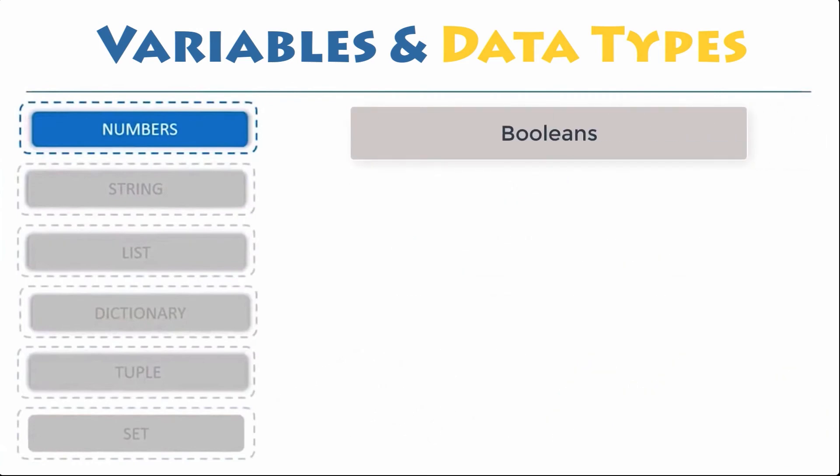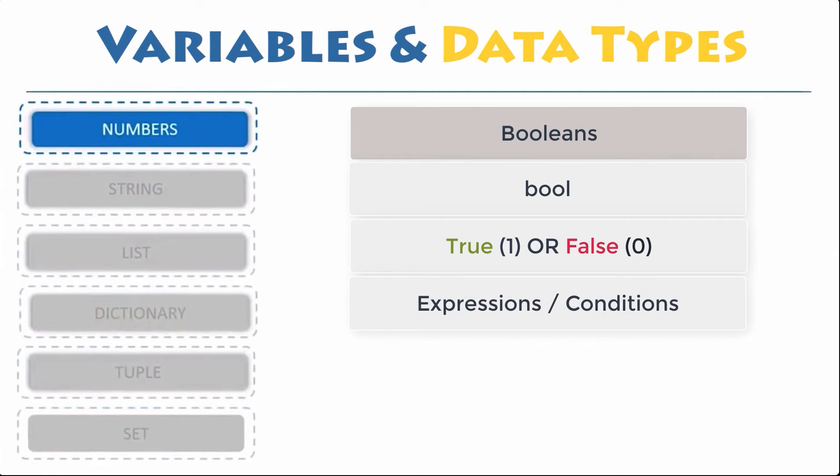Boolean. Python 3 provides a Boolean data type. Objects of Boolean type may have one of two values, true or false. In programming, you often need to know if an expression is true or false. You can evaluate any expression in Python and get one of these two answers.